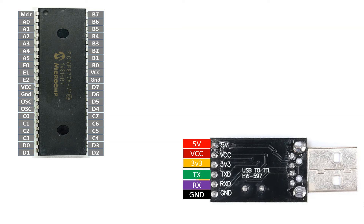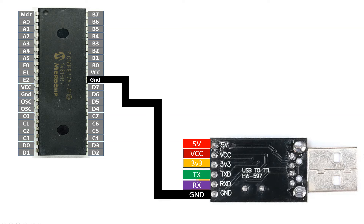Let's do the connections. First of all, connect the ground pin of your CH340 USB to TTL device with the ground of the PIC — they both must share the common ground. You don't need to connect the power pin to the PIC because when you connect this device to the computer, it will automatically get 5 volts from the computer. In my case, the PIC will be powered up using PICkit 3 and the USB to TTL device will be powered up from the computer, so no need to connect the 5-volt pin.